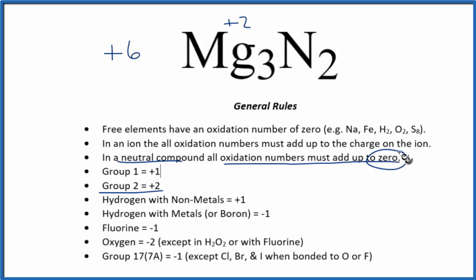So for this to be neutral, have all the oxidation numbers add up to zero, we have to have a -6 over here. So 2 multiplied by -3, that would give us -6.